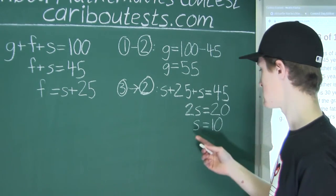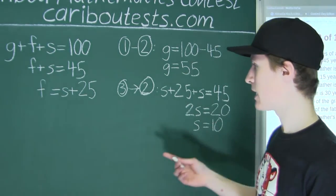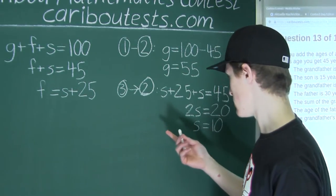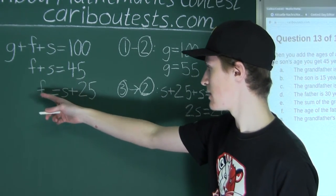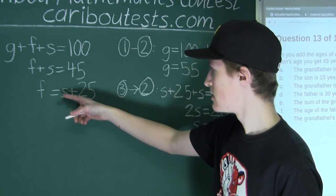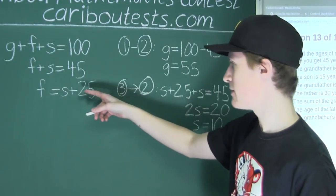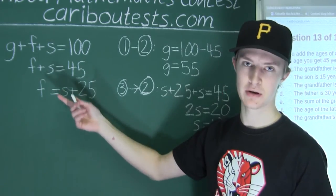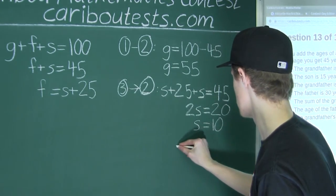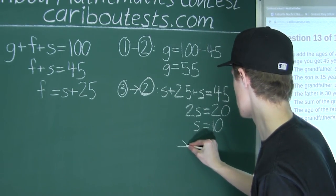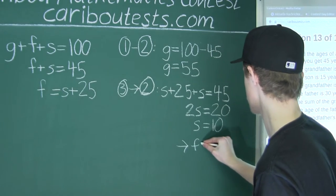So the son's age is 10. Now the only thing left is to find the father's age. We do 10 plus 25 equals 35, so F equals 35.